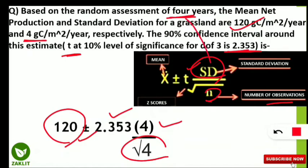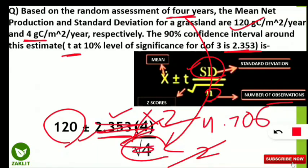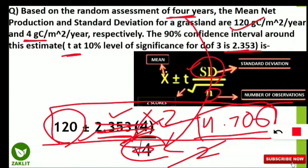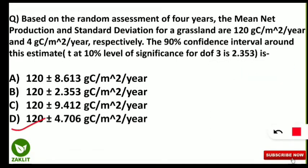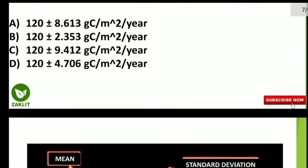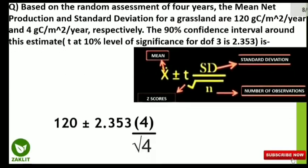Since √4 = 2, the standard deviation 4 divided by 2 gives 2, and then 2 × 2.353 = 4.706. So the confidence interval is 120 ± 4.706 g C per m² per year. Checking the options — yes, option D: 120 ± 4.706 g C per m² per year is the correct answer. The formula to find the confidence interval with T distribution is: mean ± T × (standard deviation / √N).